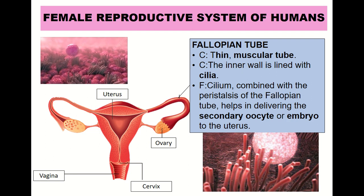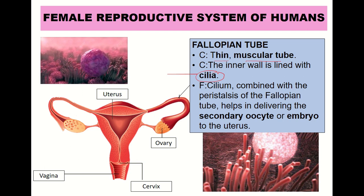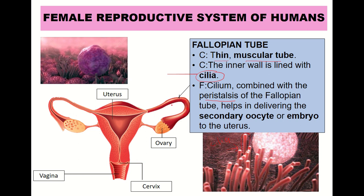Next is the fallopian tube. The characteristic of the fallopian tube is that it is a thin and muscular tube, also lined with cilia. The function of the cilia, combined with the peristalsis process, is to help deliver the secondary oocyte and the embryo through to the uterus — sweeping them toward the uterus.